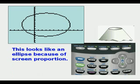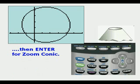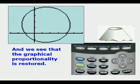We can change the proportion back to normal here by pressing Zoom and then Enter for Zoom conic. That would be Zoom 1. We see that the graphical proportionality is restored.